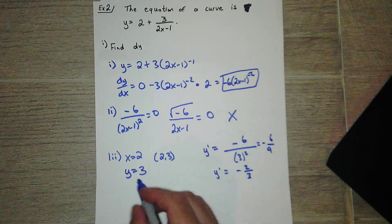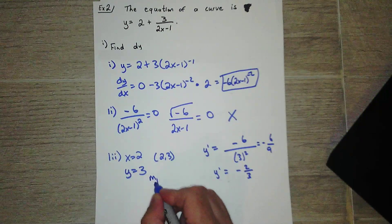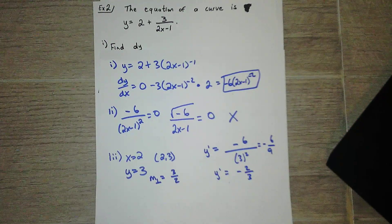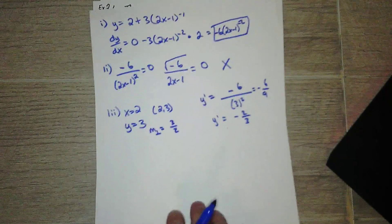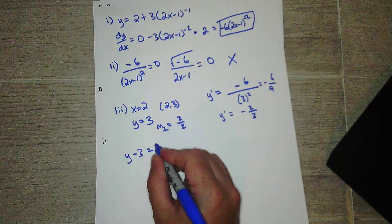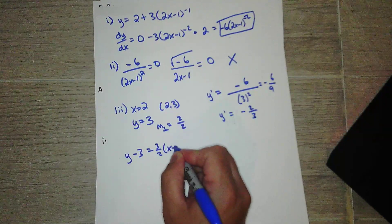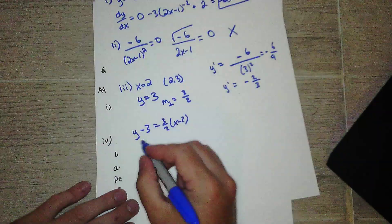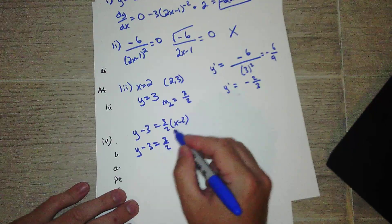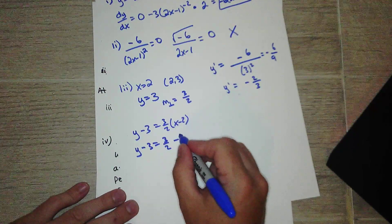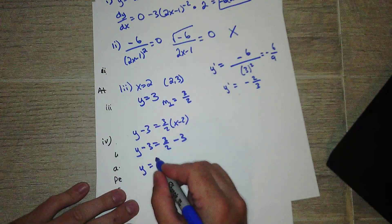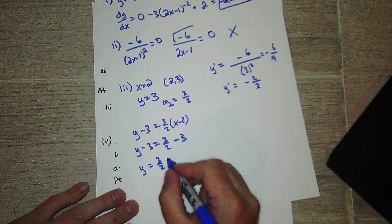Okay, so then the slope for the normal is perpendicular, so that's positive three halves. So now I can come up with the equation for the normal. Let's simplify this. Three halves times negative two is negative three. Two's just cancelled. Add the three over.